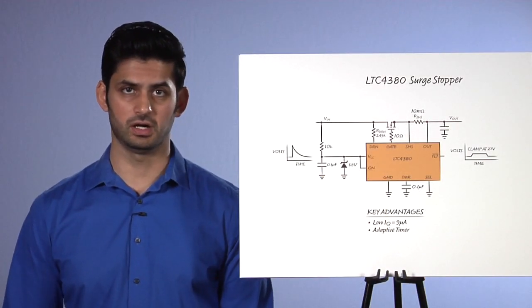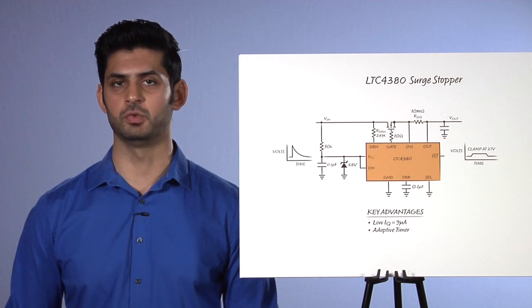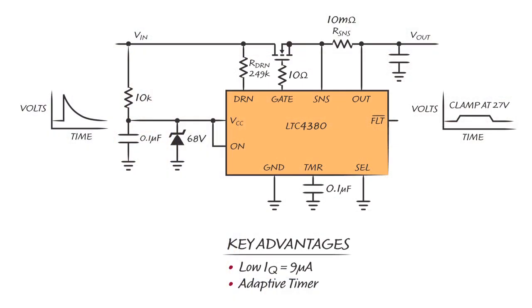Examples of such conditions are brownout events and cold crank, which are commonly found in automotive systems. The second improvement of the LTC4380 is its adaptive timer. Over-voltage and over-current conditions are limited by this adjustable timer, which runs for a time set by the value of the timer capacitor and the power dissipation in the MOSFET. This timer is adaptive to the stress placed on the MOSFET by an input or output overload.